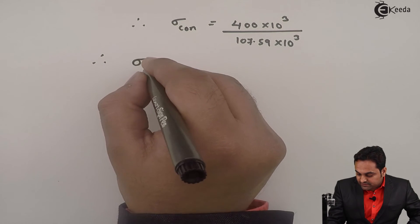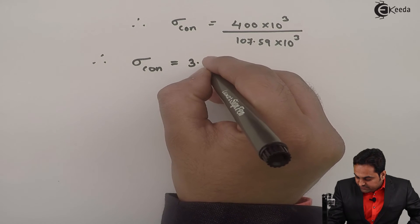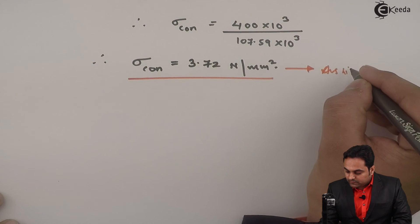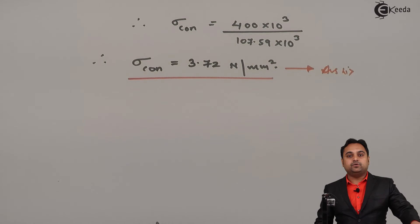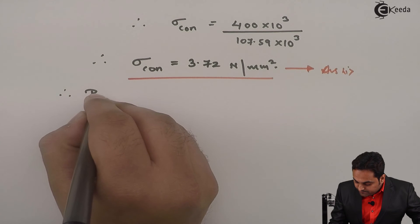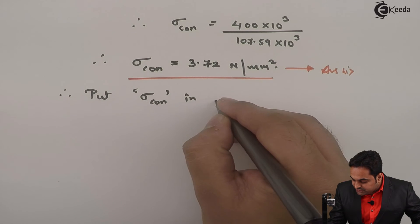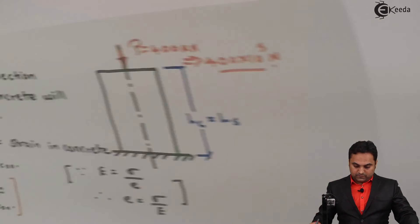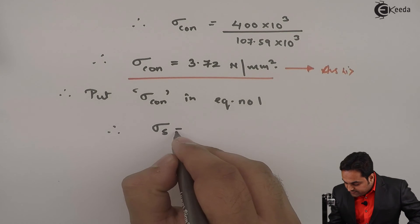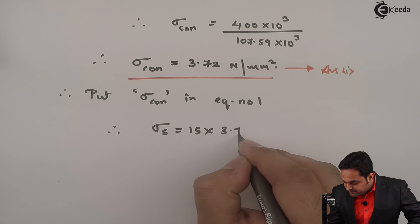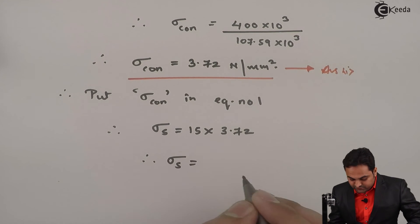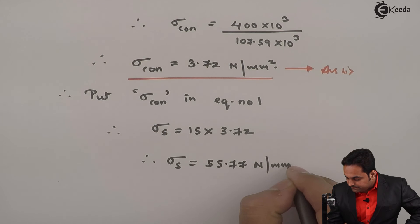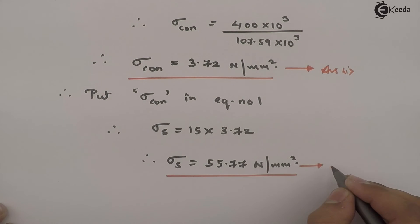Hence, stress in concrete σ_c = 3.72 N/mm² — this is the first answer. Now putting σ_c into equation number one: σ_s = 15 × σ_c = 15 × 3.72 = 55.77 N/mm². This is the second answer — the stress in steel.